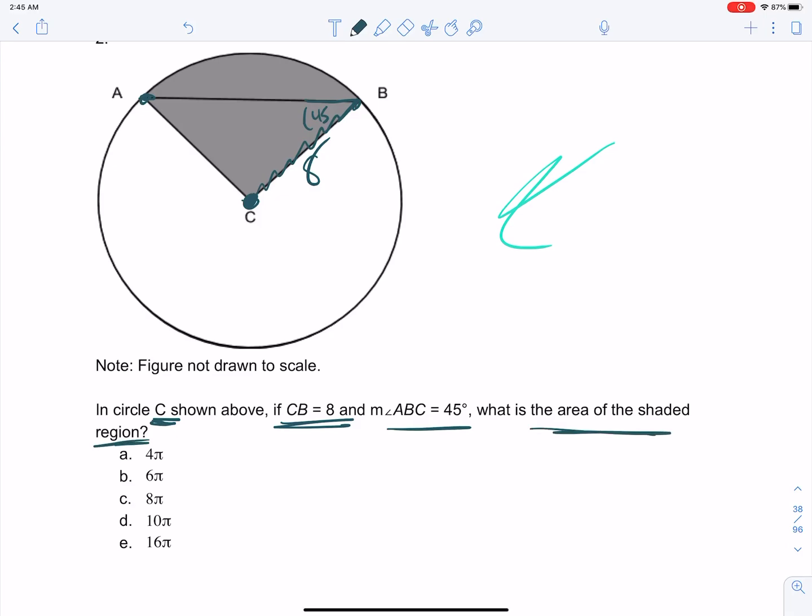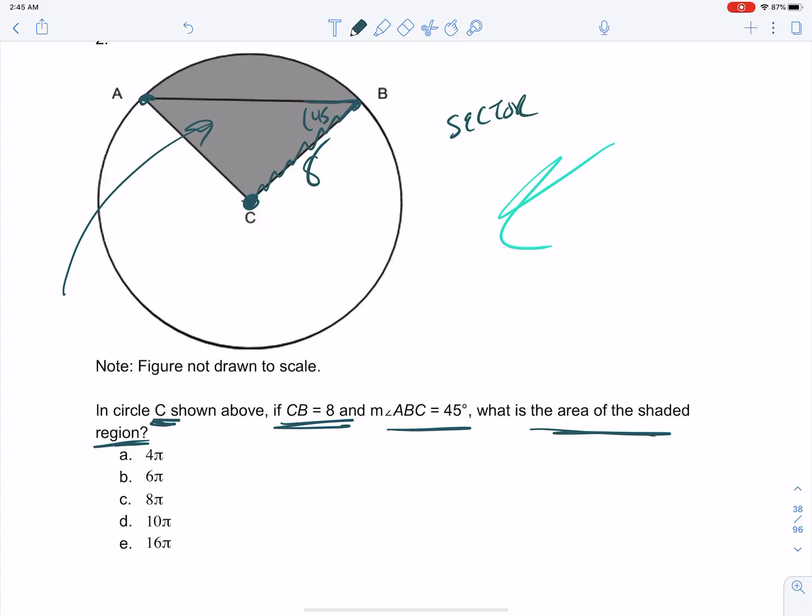And it's asking what's the area of the shaded region. Just a real quick note, whenever you're dealing with a shaded region like this, like what we have up here, that is called a sector. And just think of a sector as a slice of a pizza. And the arc is part of the crust.